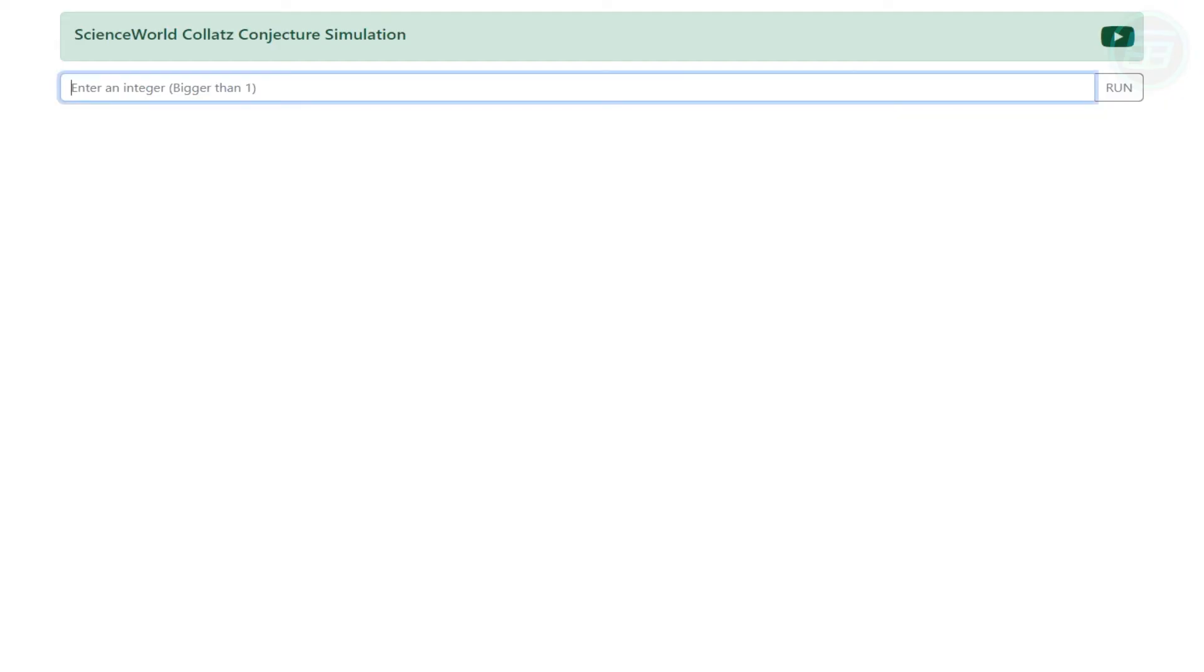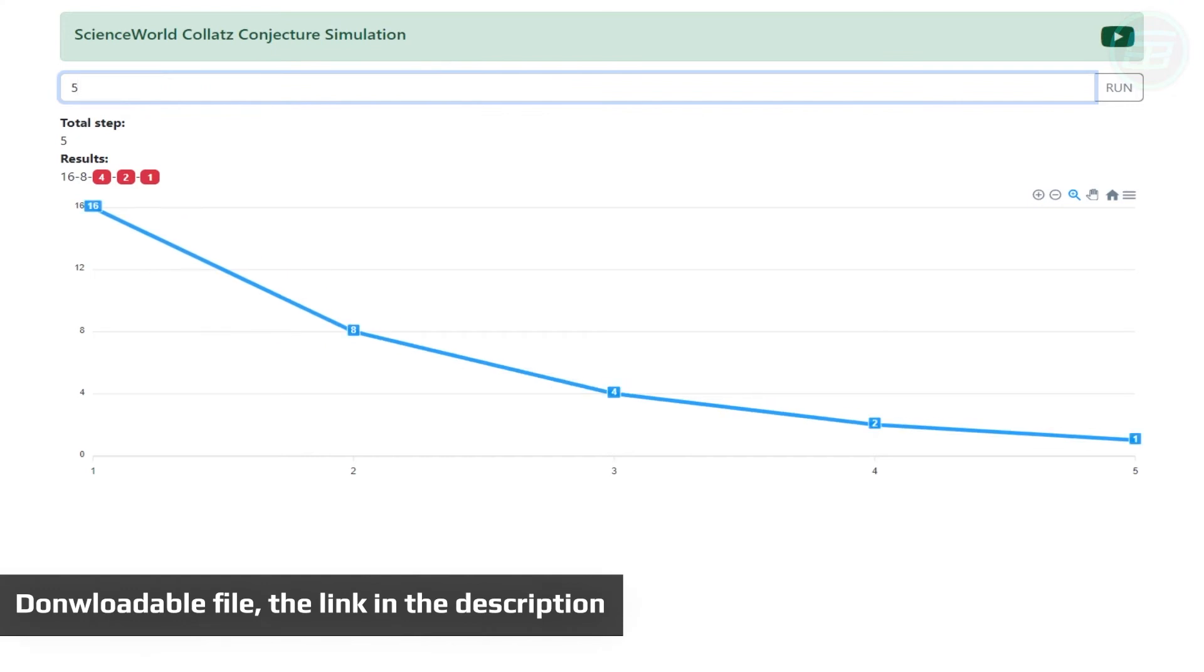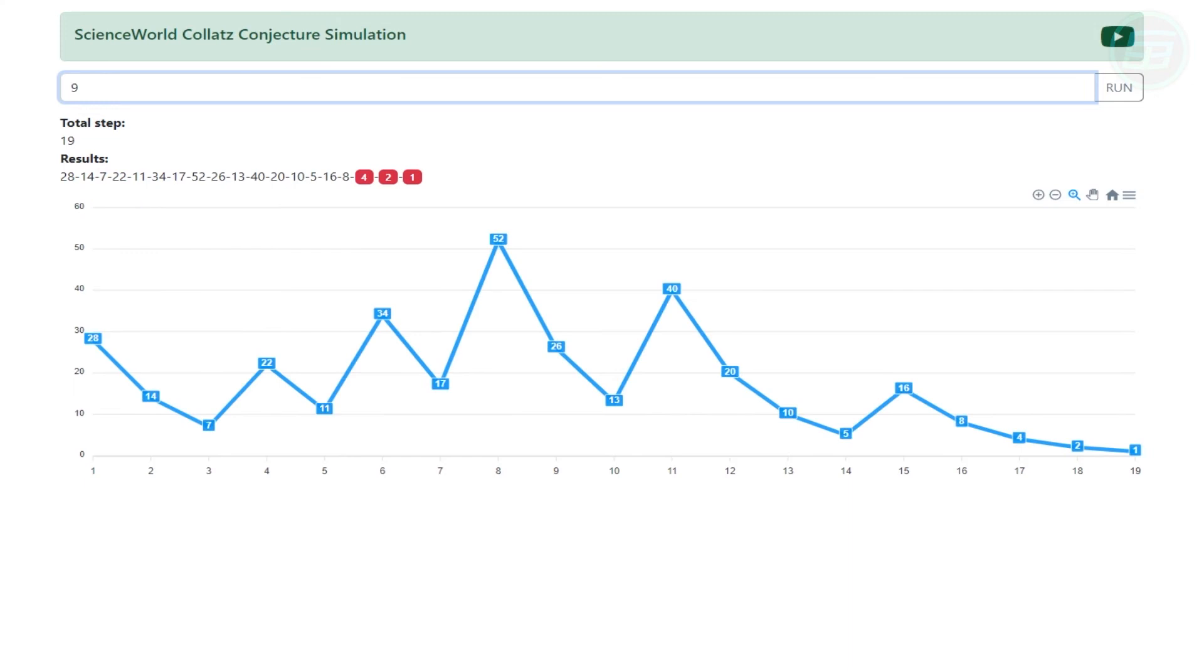Let's run a simulation using some different starting numbers and check if they obey the Collatz conjecture.